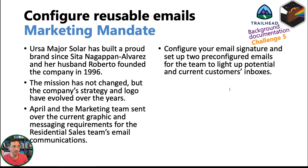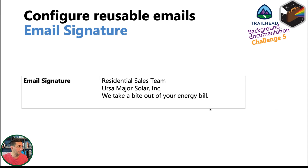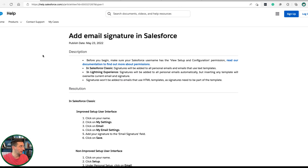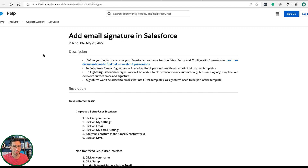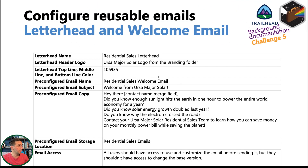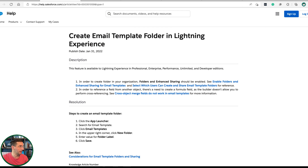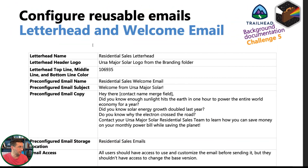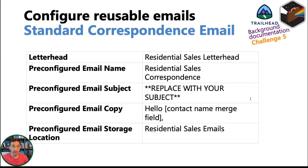Challenge five: you're going to configure reusable emails — basically make an email signature and set up two pre-configured emails for the team. One thing that was confusing was where to add the email signature; I've linked a help doc in the description below. To make the letterhead and welcome email, you first need to create the storage location, then create the letterhead and the email. The help document 'Create Email Template Folder in Lightning Experience' was very helpful. Then there's the standard correspondence email, and that's it for challenge five.